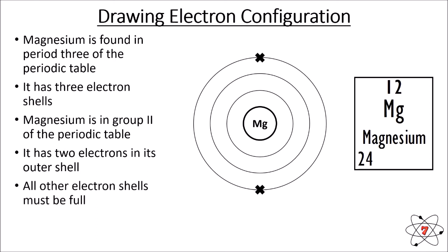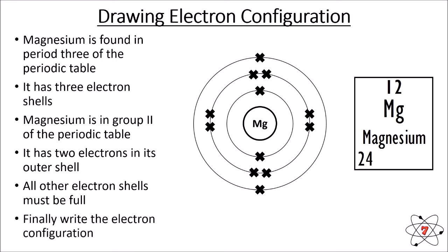We know that all other electron shells must be full, so we put two electrons in the first shell and eight electrons in the second shell. You'll notice that in the second shell I've paired up the electrons — this is just for clarity, making it much easier to see that there are eight electrons. The final thing we need to do is draw the electron configuration, which tells us how many electrons are in each shell. We open brackets, write 2 for the first shell, 8 for the second, and 2 for the final shell, giving us an electron configuration of 2, 8, 2.